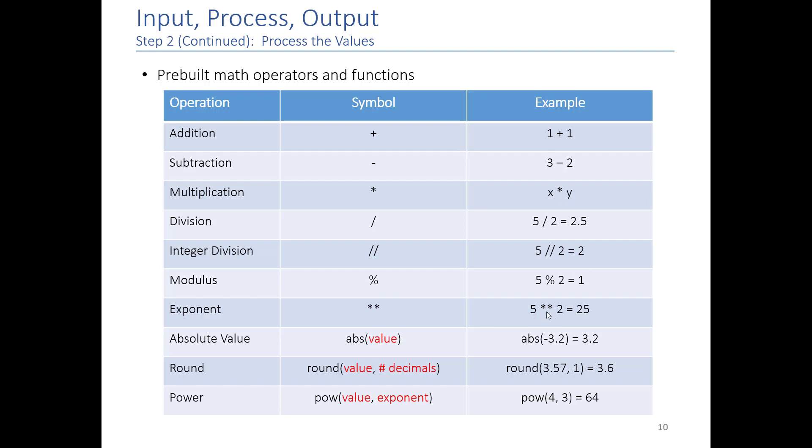Double star is exponent. So 5 double star 2 is the same as saying 5 squared. ABS is absolute value. So if you put a negative number inside here, it will give you the absolute value of it. And round and power are pretty self-explanatory. You put a number in both of these, you tell it either how many decimals or the exponent, and it will either round it to, in this example, one decimal place, or raise it to that power.